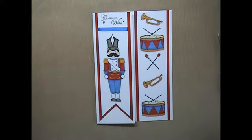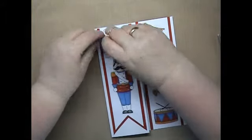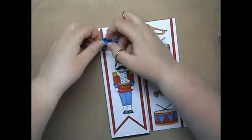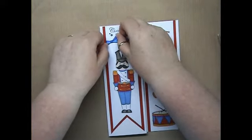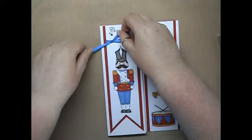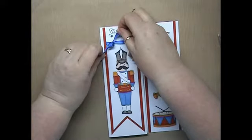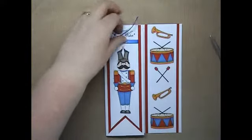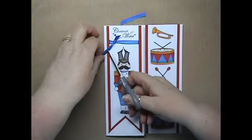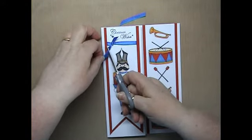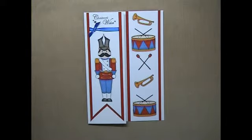Then to finish off, we need our spare bit of ribbon and we're going to do a little knot. We're going to trim our ends off. And that's it. That's our card for this month.